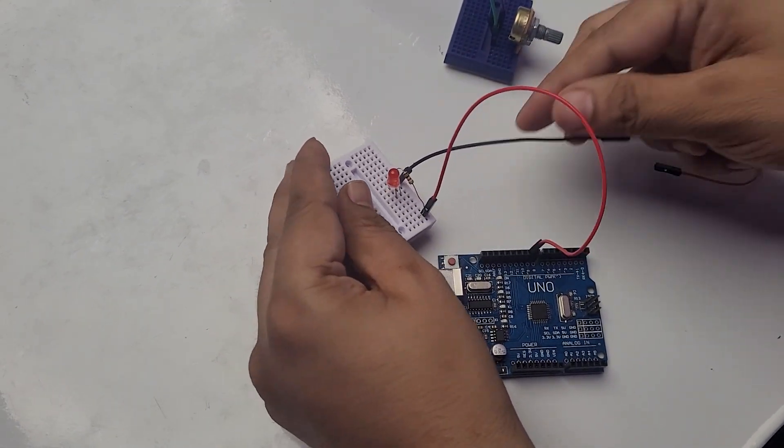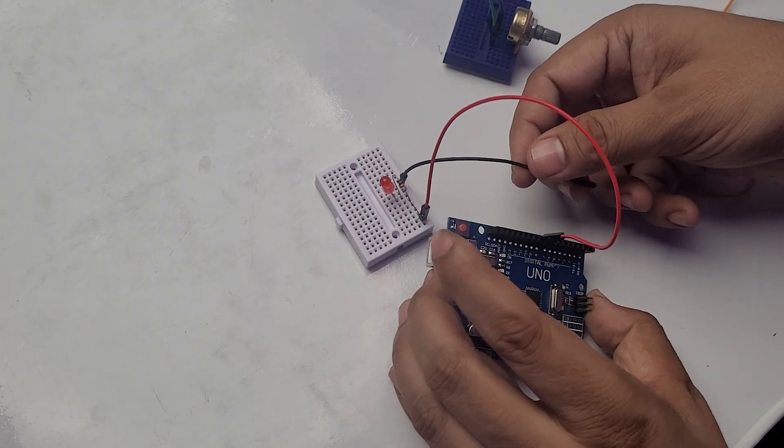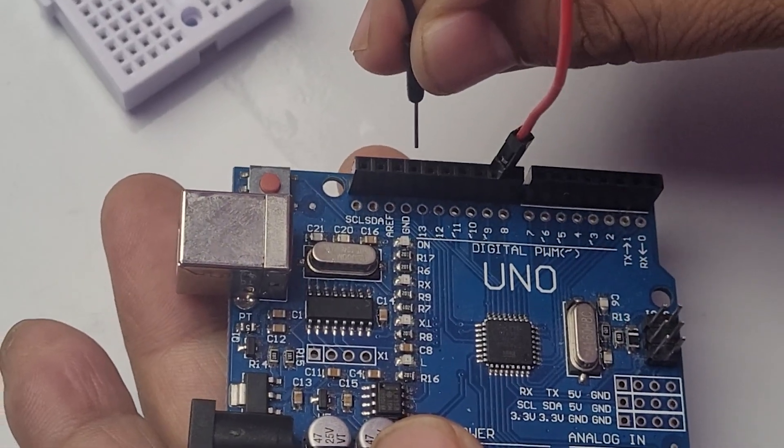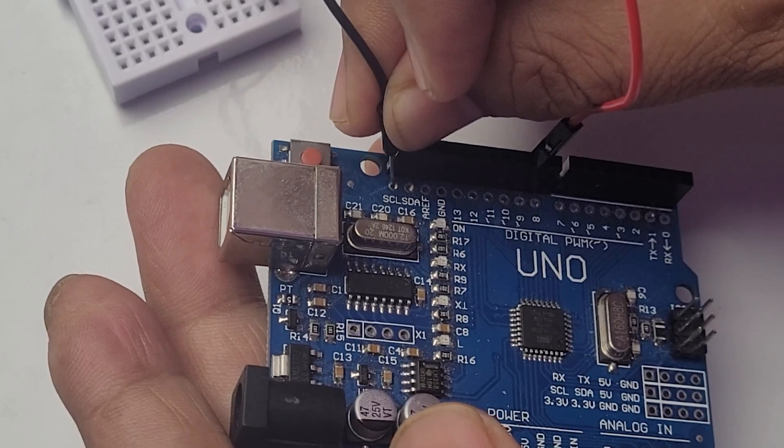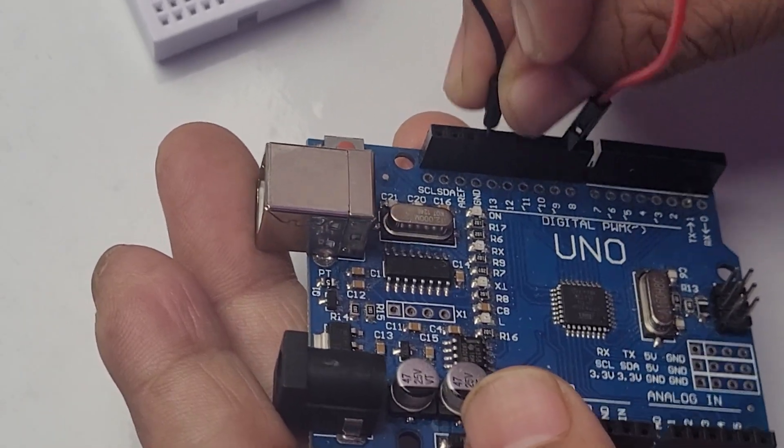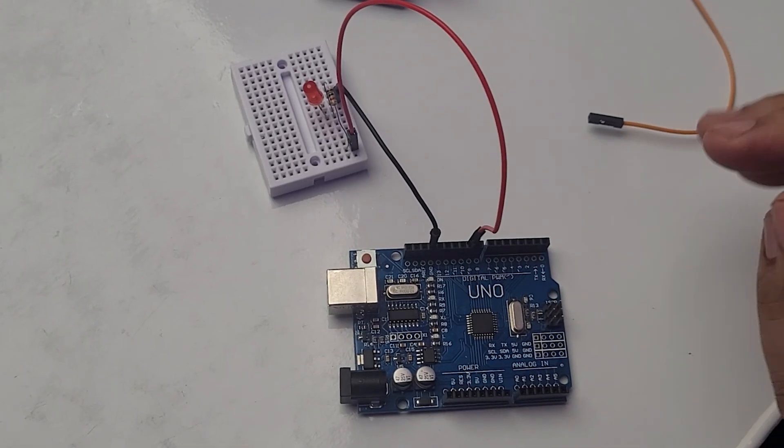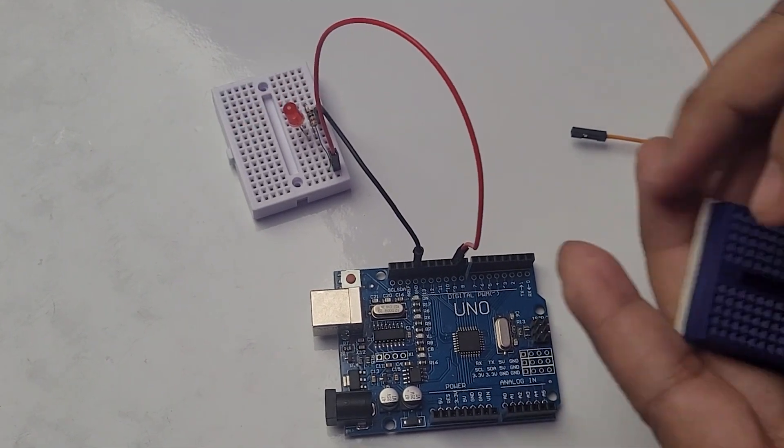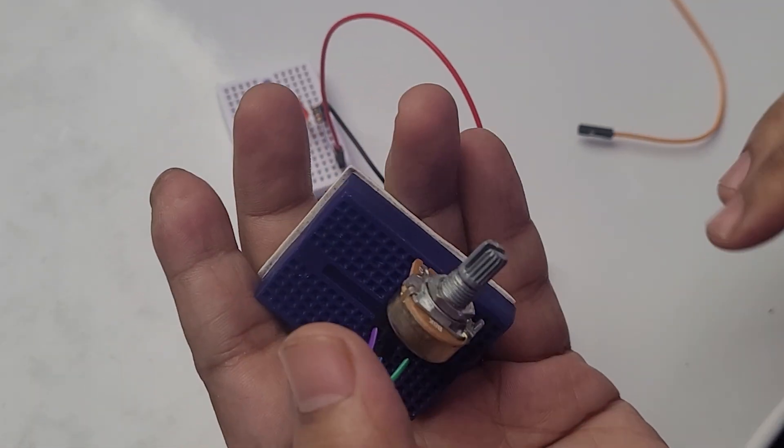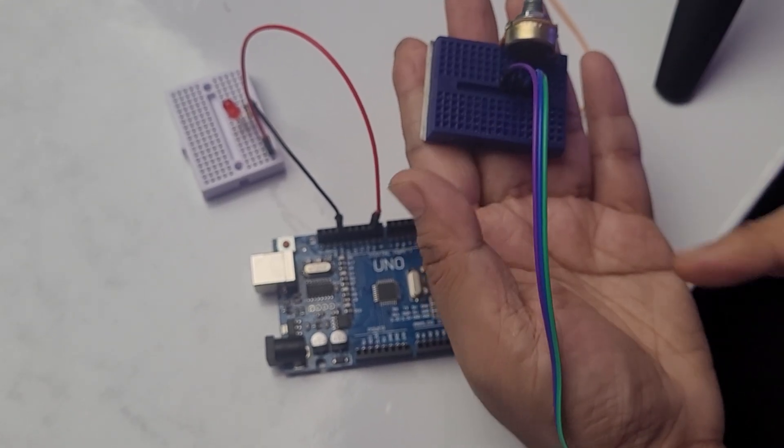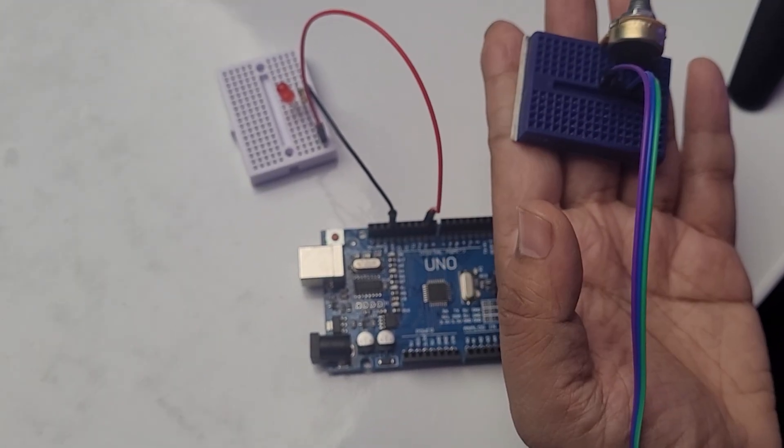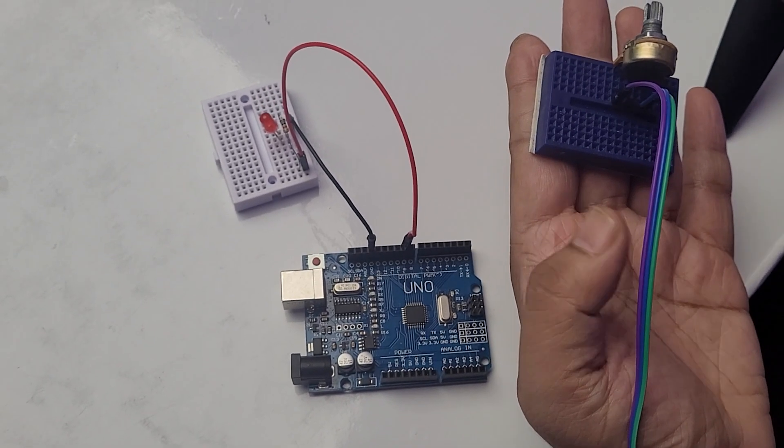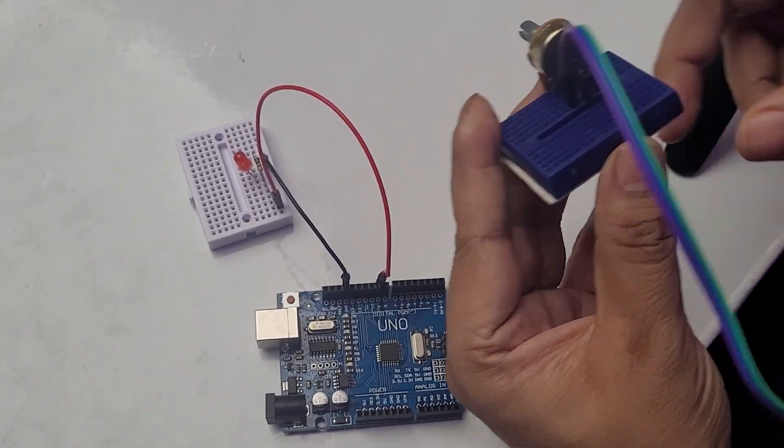Now what I'm going to do here is I'm going to directly connect this LED cathode to the ground pin on my Arduino. So here I can see the ground pin is this one, so here I'm going to connect it with the ground pin. Now the connection from the LED side is completed.